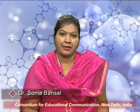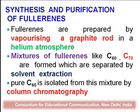In this section we discuss the synthesis and purification of fullerenes. How do we prepare fullerenes? Fullerenes are prepared by the vaporization of a graphite rod in a helium atmosphere. We vaporize the graphite using the arc method, and plasma is generated in the presence of helium atoms, forming the fullerenes. The soot particles formed from the graphite rod are a mixture of fullerenes C60 and C70, which are separated by solvent extraction.